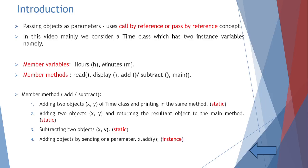The second program adds two objects x and y, returning the resultant object to the main method — the method is static. The third program has a subtract method which receives two objects as parameters and subtracts their contents — also a static method. The fourth program has an instance method that adds objects by sending only one parameter, because the instance method is called from the object: x.add(y).